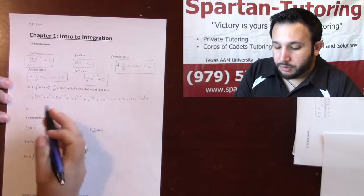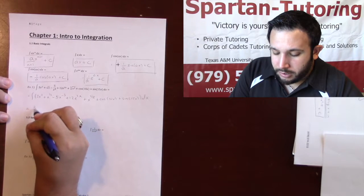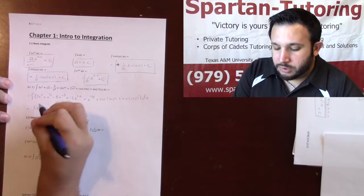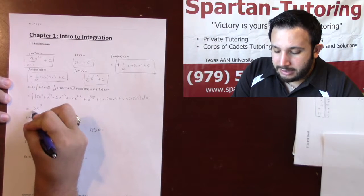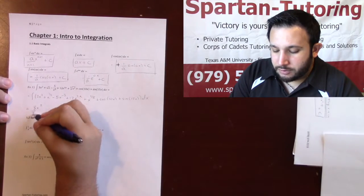And so, the integral of 3x squared, I rewrite my constant and my variable. I add 1 to the top, 2 plus 1, that's 3. I take this number, flip it, multiply it in front. Which, hey, 3 divided by 3, that's just 1. So that's nice.